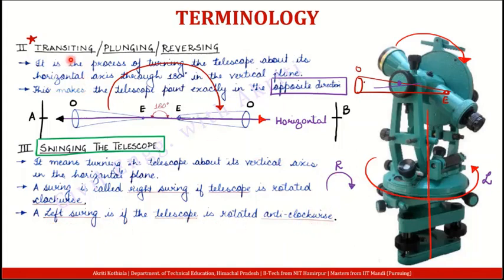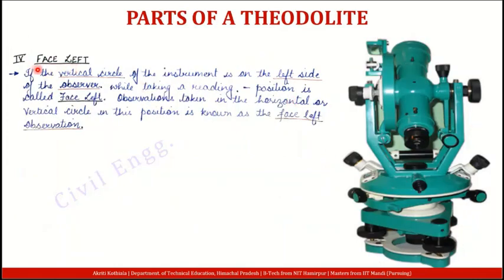So I hope transiting aur swinging aap ko samaj aa gayi hogi, kyunki yeh bohot zyada important terms hain theodolite ke liye. Next aata hai Face left. Face left kya hota hai — yoh vertical circle hai, iski position decide karti hai ki aapke theodolite ka face kya hai. Agar aapka joh vertical circle hai, jaisa is particular figure mein hai, woh left side pe hai observer ke — yeh eye piece hai hamaara. Kyunki yeh eye piece hai, to observer yahan pe khada dekhe ga through the telescope.